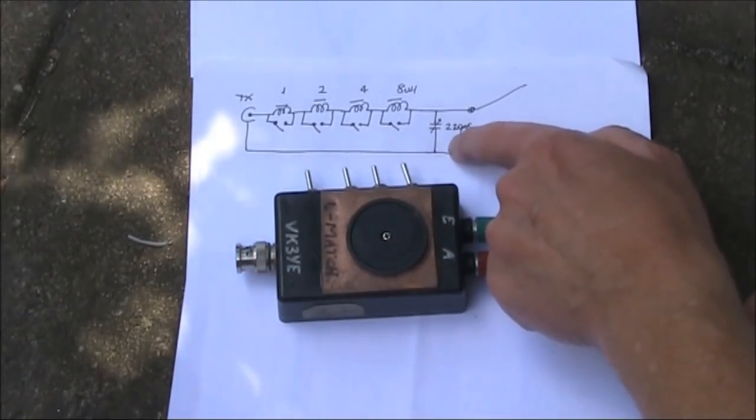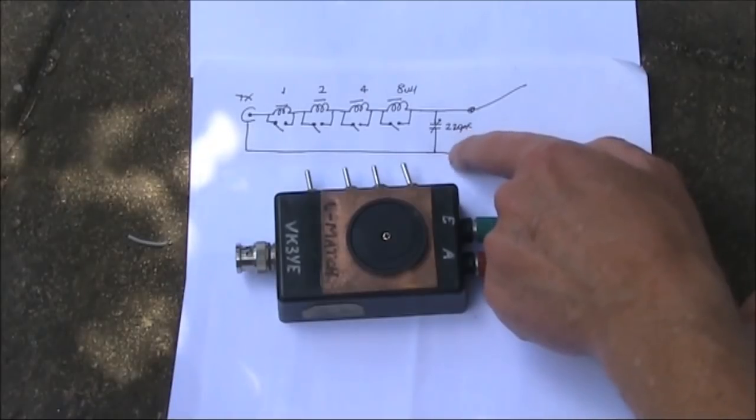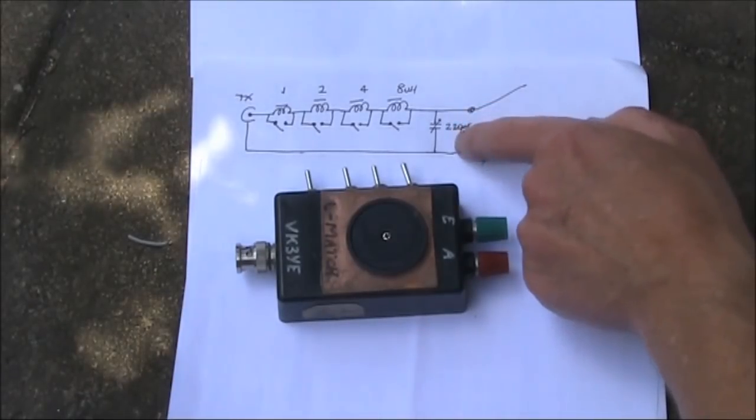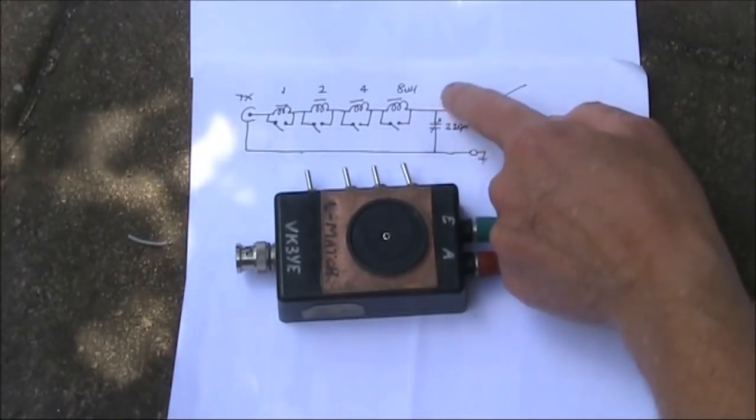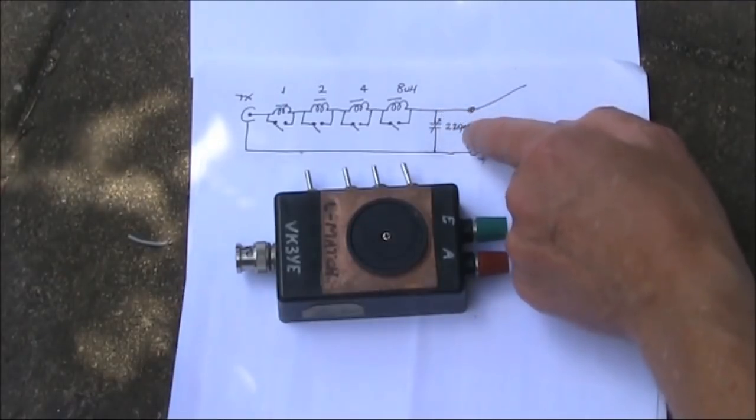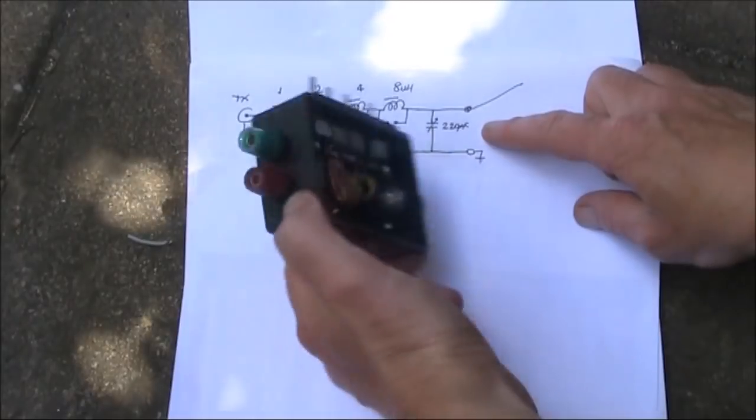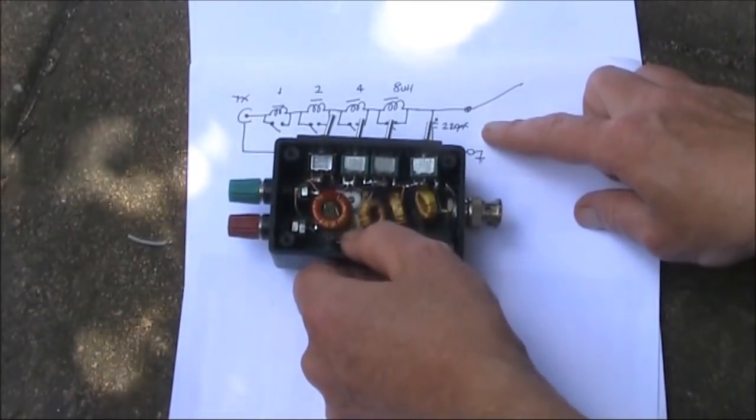The variable capacitor used has a maximum capacitance of around 220 picofarad. So far so good, but what if you want to get more capacitance to match a wider range of antennas, particularly on 80 metres? Well, you could substitute a bigger variable capacitor, but there's not much room.